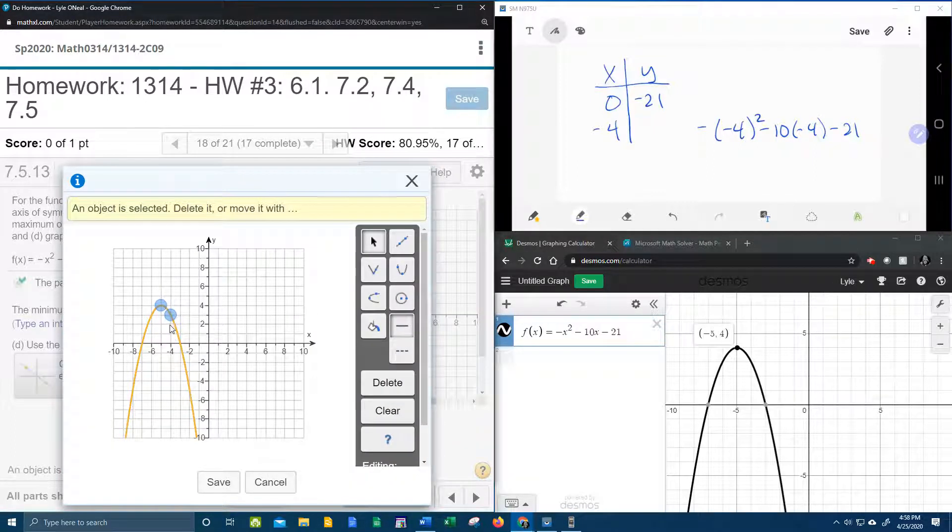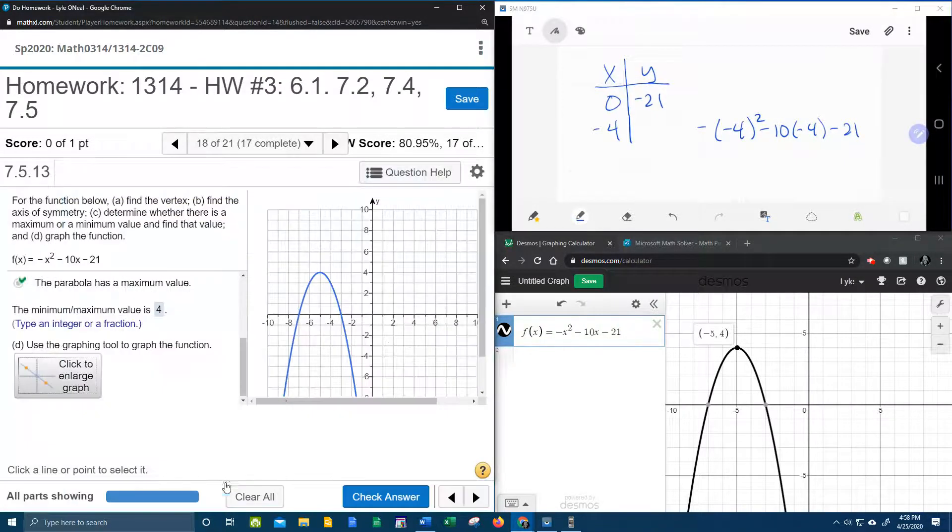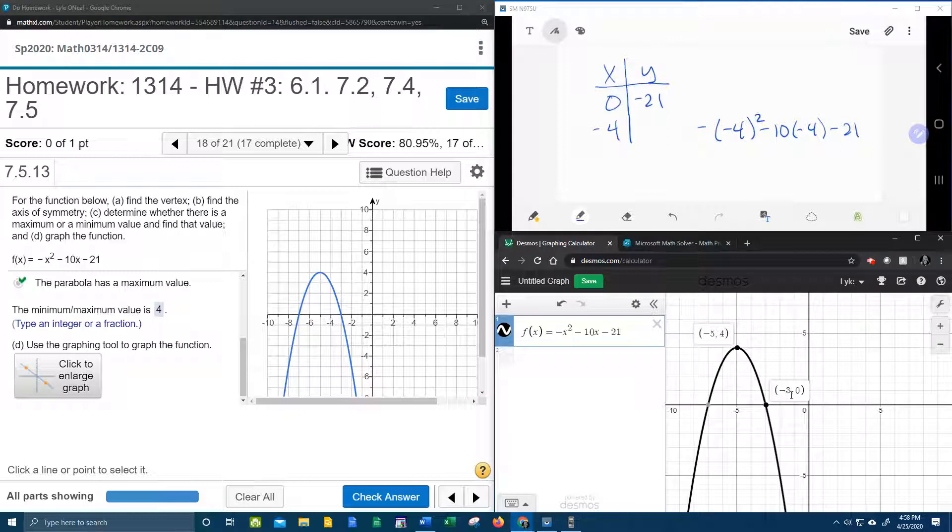Minus negative 4 squared minus 10 times negative 4 minus 21. 3. So that tells us if I'm at negative 4, then I need to be at 3. And it only takes 2 points. Let's save that. Oh, and let's compare that over here to Desmos. So at negative 3, I'm at 0. Look at this. Negative 2. Negative 3, I'm at 0.